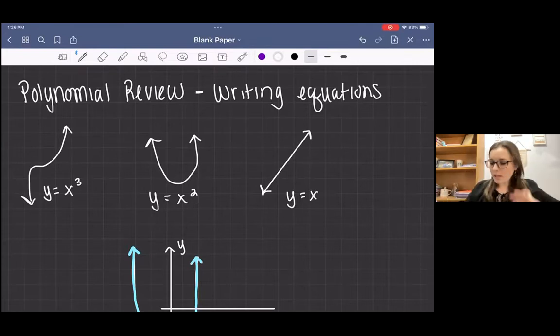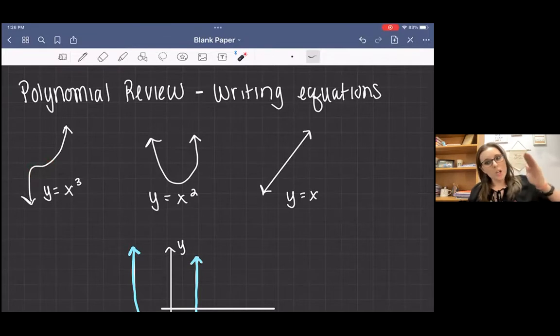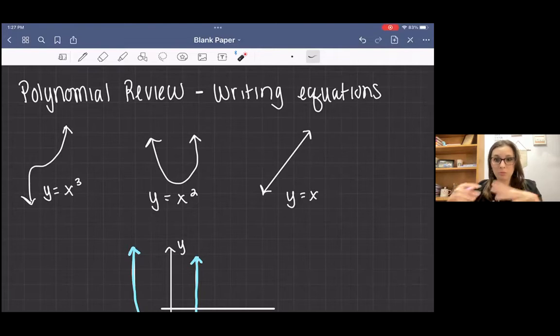And you might hear me refer to in my lessons, this has a jogging intercept. So it kind of like slowly goes through. And in polynomials, when you're looking at a bigger graph with different types of characteristics, if the function jogs through an x-intercept, then that's going to be associated with a third degree polynomial.